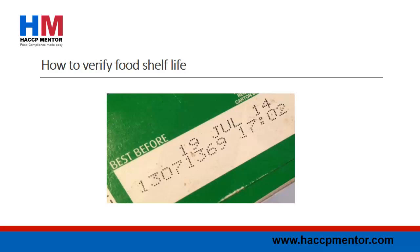The next thing you can do is undertake challenge testing of the product to support your storage instructions — for example, to account for the cold chain process post dispatch. The next thing to do is to test the product beyond the stated shelf life. For example, test your product at 13 months if the product has a 12-month shelf life indicated on the label.